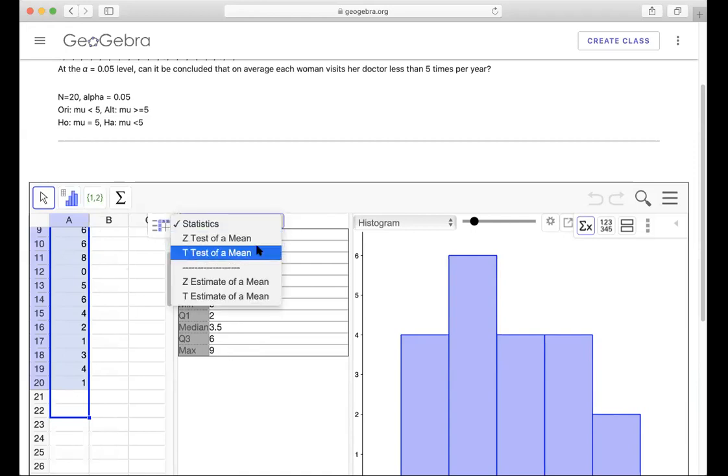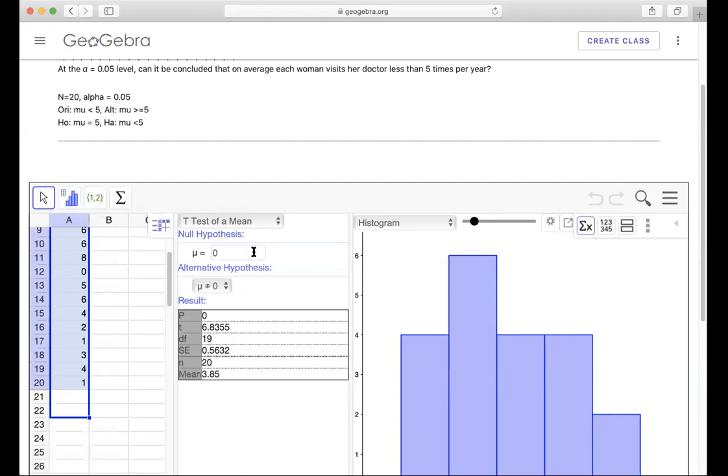Now we're going to use the t-test of a mean. You can enter your mu here, mu equals five, so you enter five. And then for alternative, that would be mu less than five. So you choose less than five. When you have that, your information will come out. This p here is the p-value, the t here is the t-value.